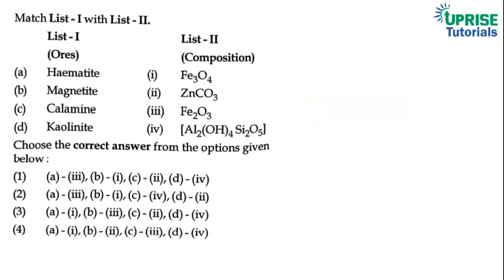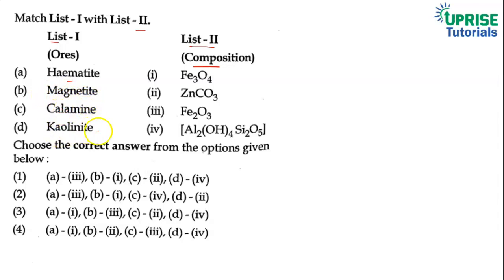The given problem is to match List 1 with List 2. List 1 mein ores diye gaye hain, aur List 2 mein in ores ke compositions diye gaye hain. List 1 mein pehla diya gaya hai hematite, doosra magnetite, teesra calamine, aur chautha kaolinite. Ab hume match karana hai ki kaun sa ore jo hoga, vah List 2 ke kis composition se match karega.